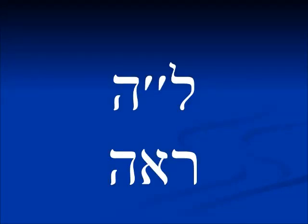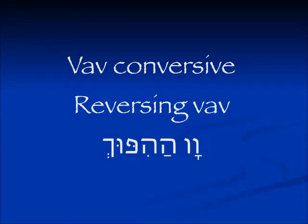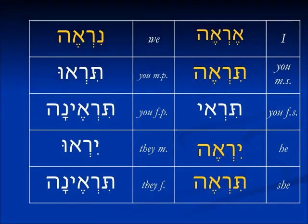The first circumstance that governs this possibility is when we have a Lamed-He — that means the third letter of the verb is He. For example, ra'a, to see. When this verb is conjugated in the future it looks quite normal. However, in the circumstance where there is a conversive vav — or what some people call reversing vav, in Hebrew called vav hahipuch — when that vav is attached to a future tense verb, many times we read it as past tense. What happens in the forms that end in He is that in this reversing vav form they will lose the He.